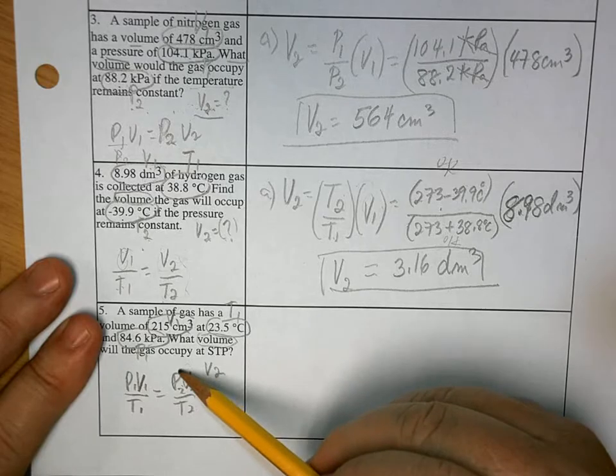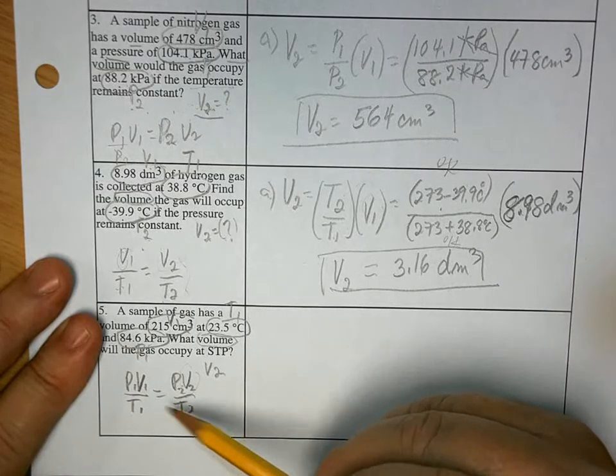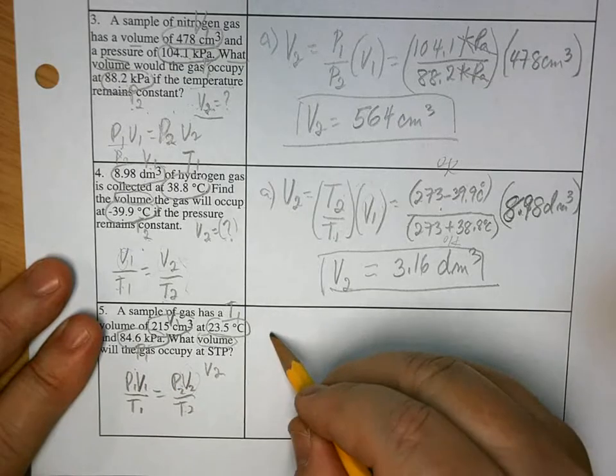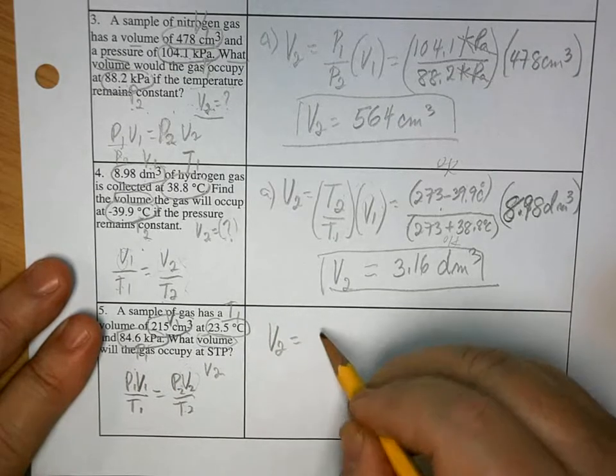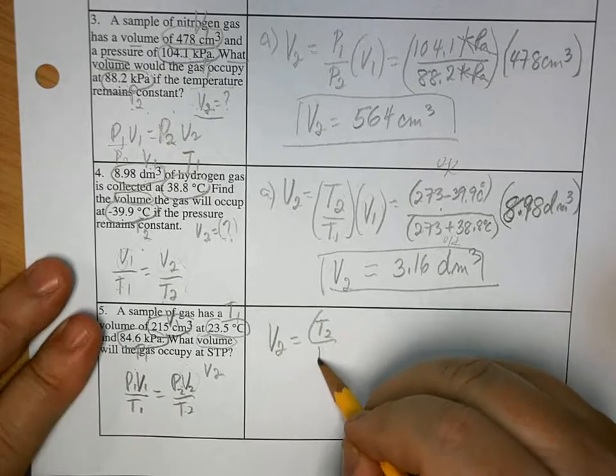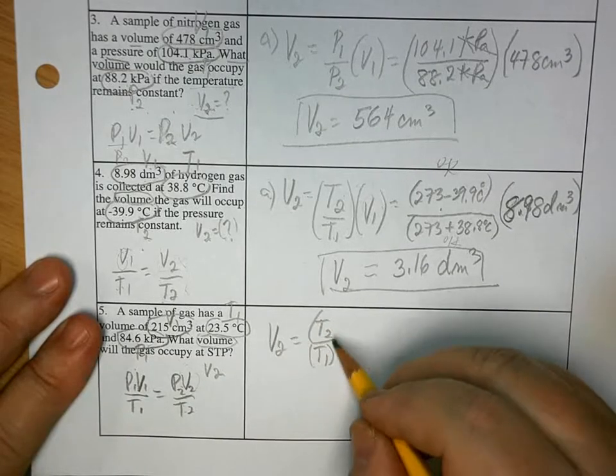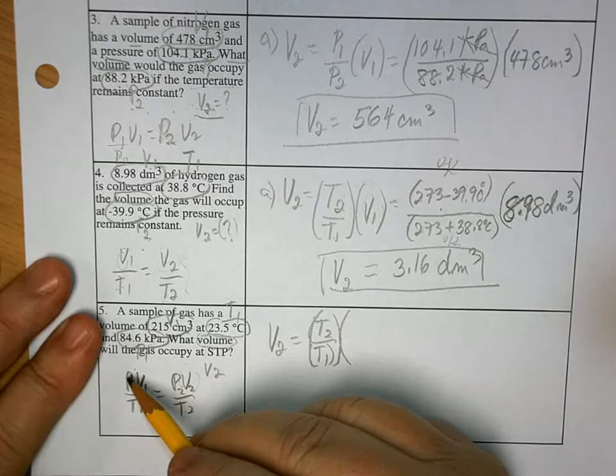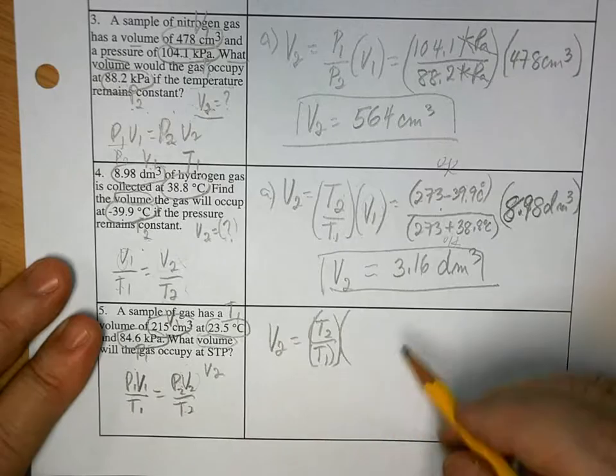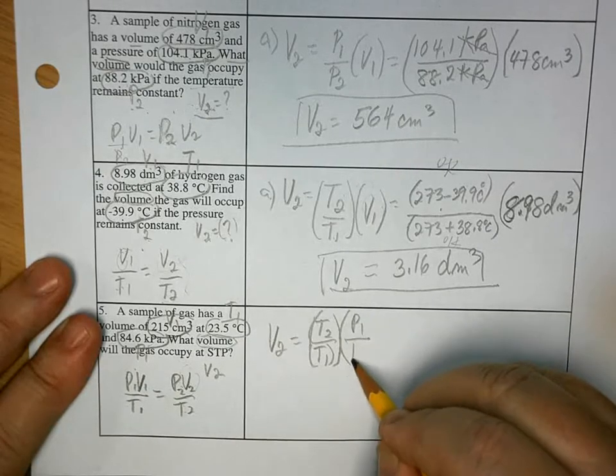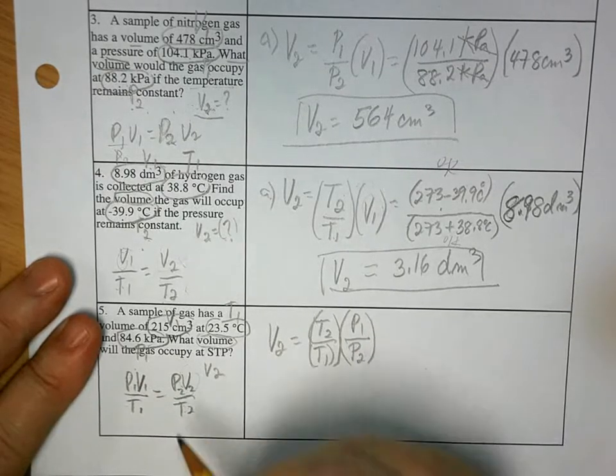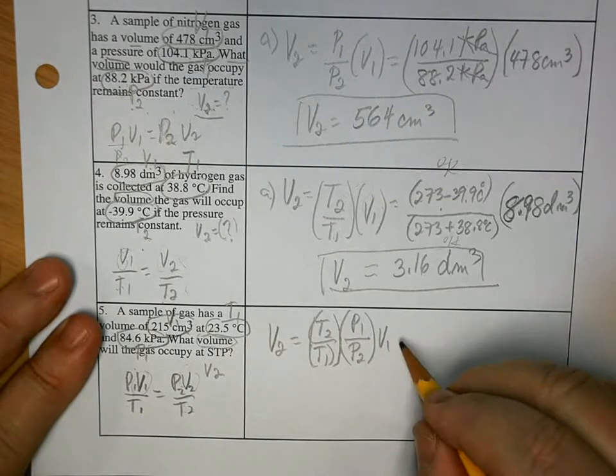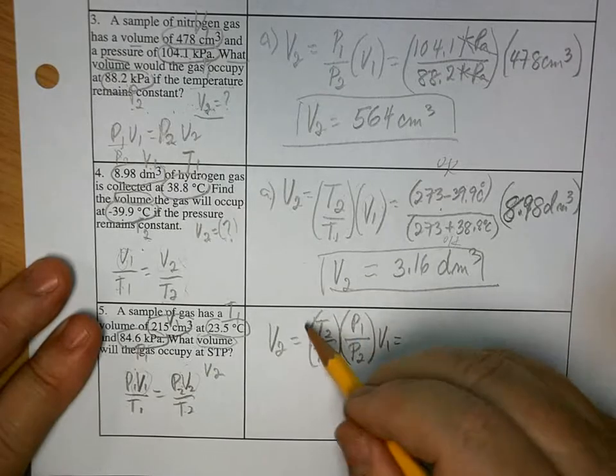So we are solving for this. So we have to multiply this over there. So it's going to be T2 over T1. So we'll write that down. V2 is equal to T2 over T1. And then what? We have to multiply this there. So it's going to be P1 over P2. And then what are we left with? V1.